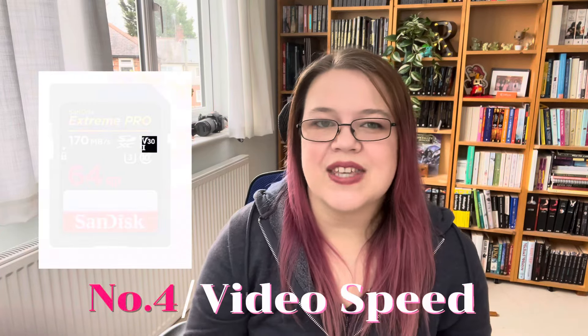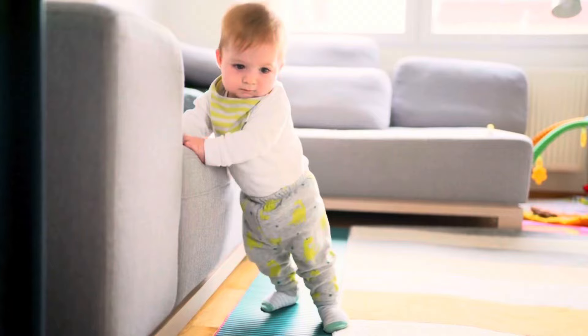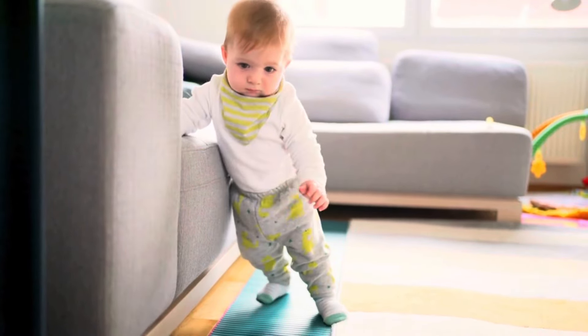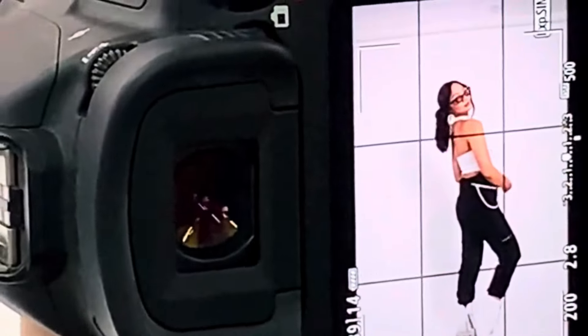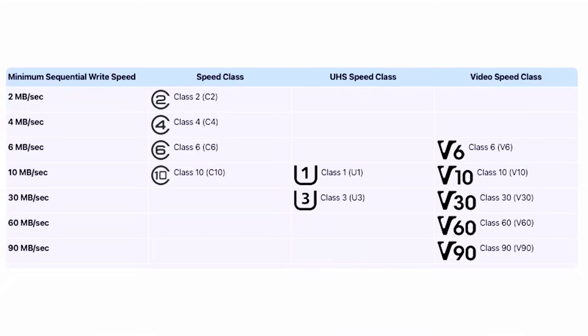Next, you need to know your Video Speed Class. If you're looking at V6, it will write at a minimum speed of 6 megabytes per second. Then you've got V10 at 10 megabytes per second, and then V30, V60, V90, and so on. This tells you your minimum write speed, which is important when capturing slow-motion footage or if you're shooting at 60 or 120 frames per second.